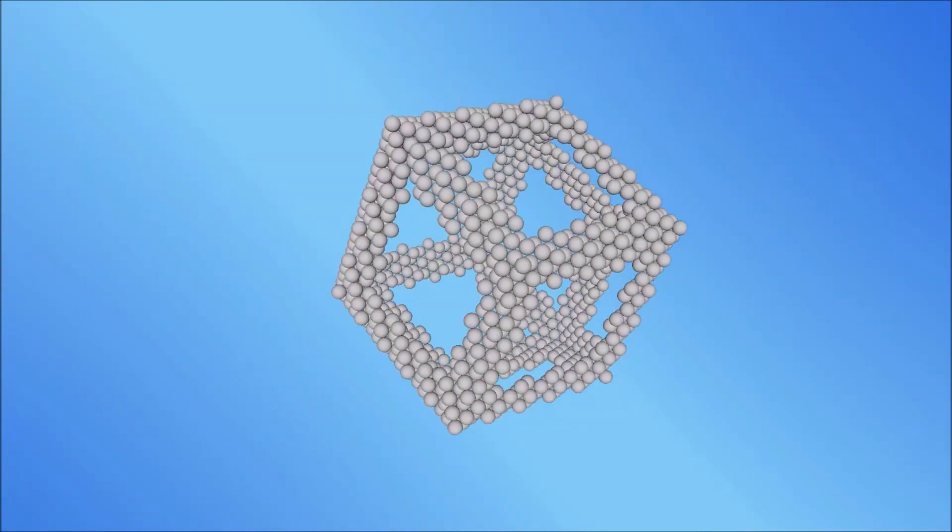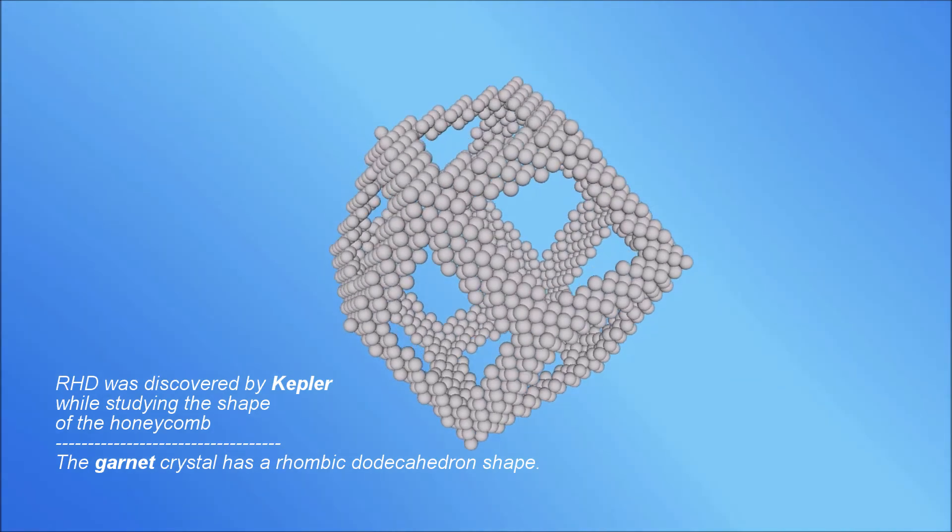The rhombic dodecahedron was discovered by Kepler while studying the shape of the honeycomb.